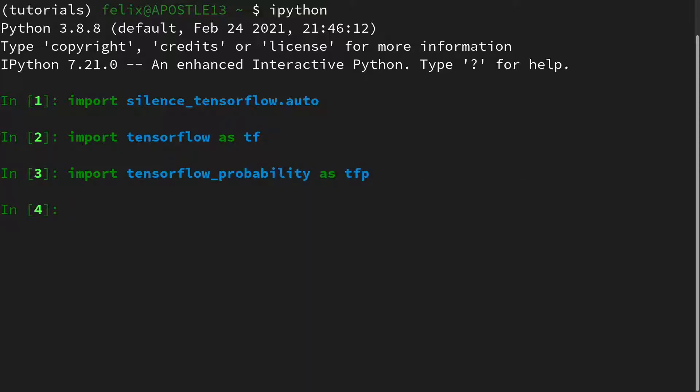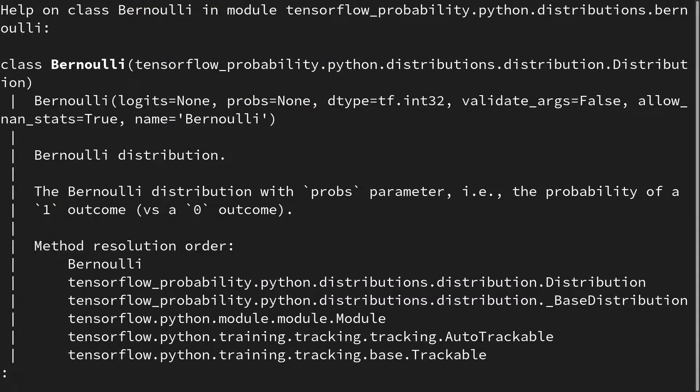Our goal is now to look at the Bernoulli distribution and define it once with a probability and once with a logit. First let us check the documentation of the Bernoulli. If we look at this, we see that it can either take logits or probabilities as inputs.